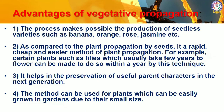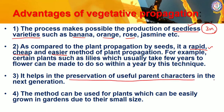The advantages of vegetative propagation are: first, it makes possible the production of seedless varieties — examples include banana, orange, and rose. Second, compared to propagation by seeds, it is a rapid, cheap, and easier method. Third, it helps in the preservation of useful parent characters in the next generation. Fourth, this method can be used for plants that can easily be grown in gardens due to their smaller size. These are the key advantages of vegetative propagation.